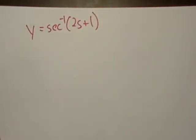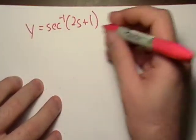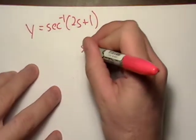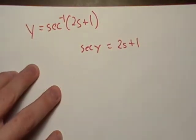Y equals inverse secant of 2s plus 1. Okay, this implies that secant y is equal to 2s plus 1, right?